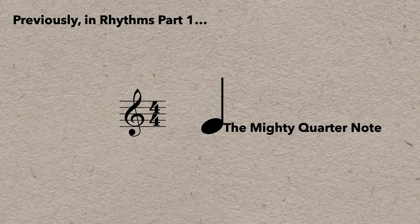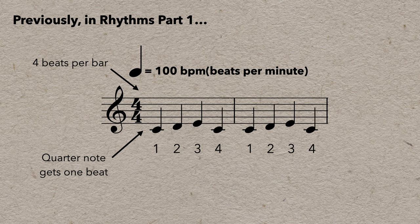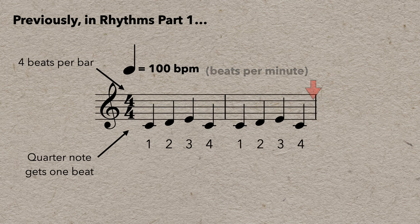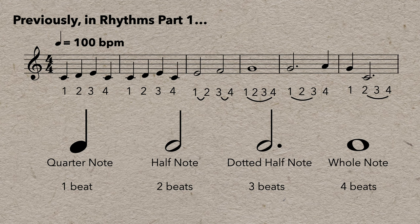In 4-4, there's four beats in a bar, and the quarter note gets one beat. The quarter note defines the tempo and aligns with the beat. Longer notes are defined by how many quarter notes long they are, like half notes, dotted half notes, and whole notes.